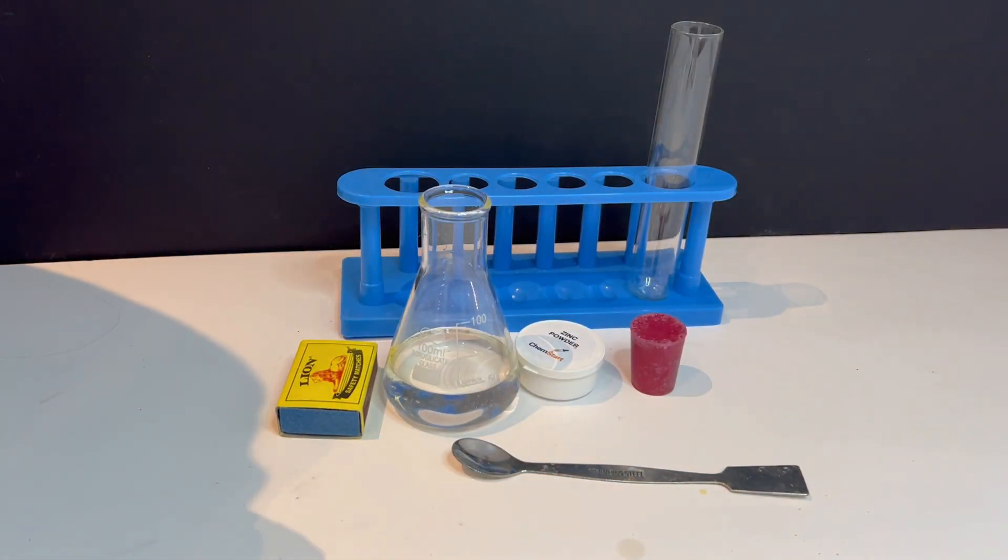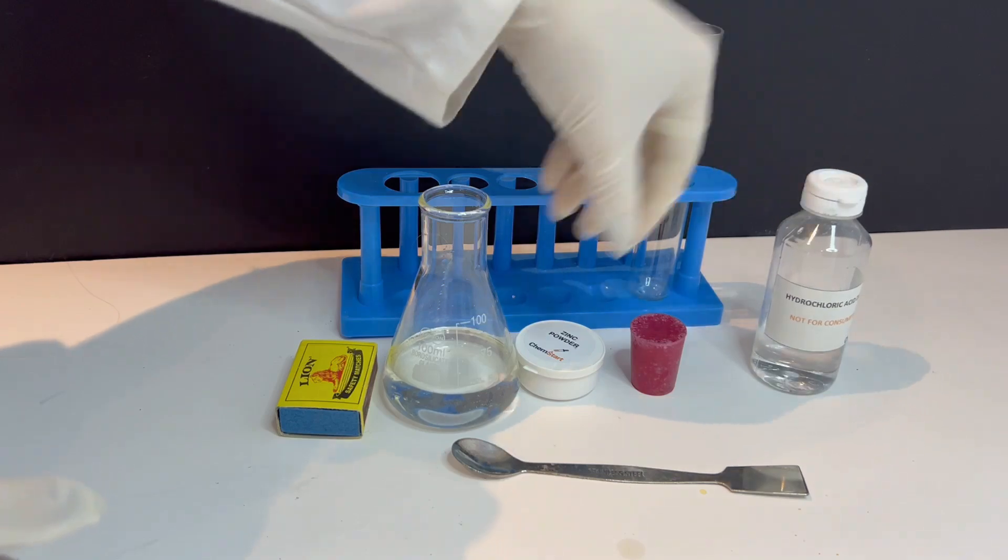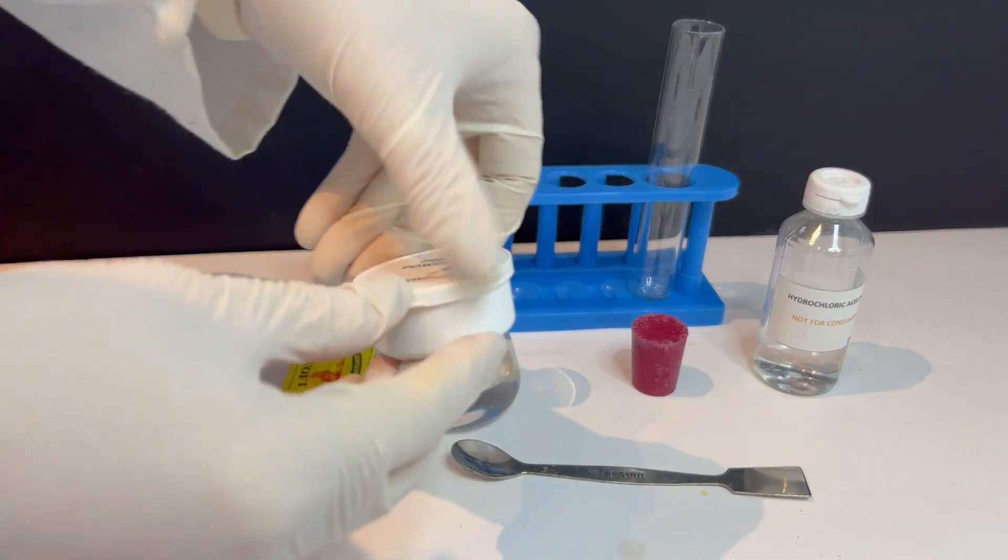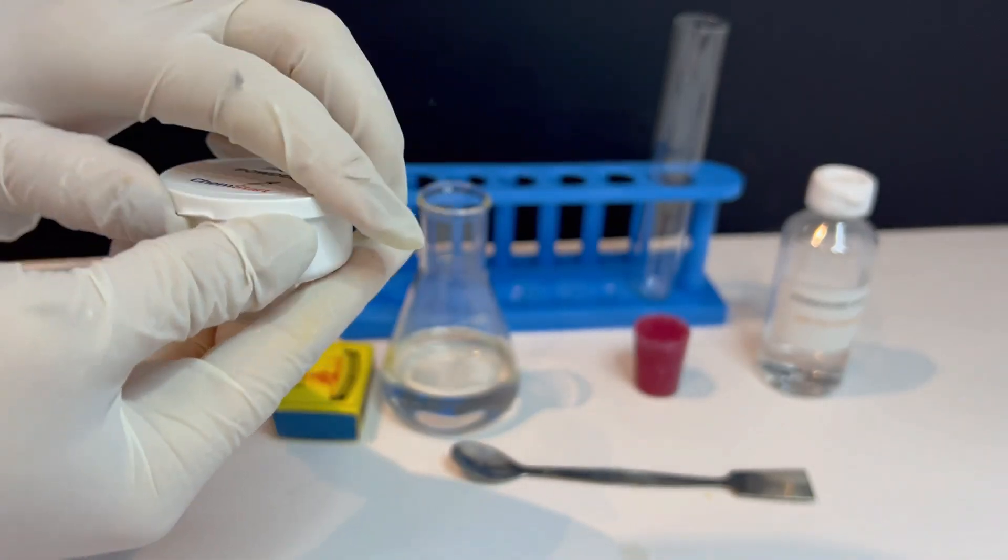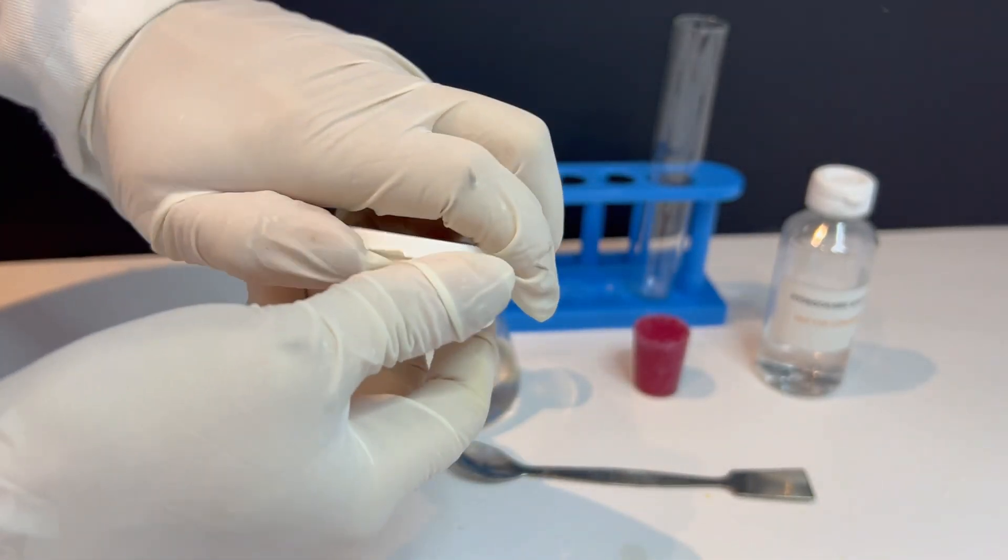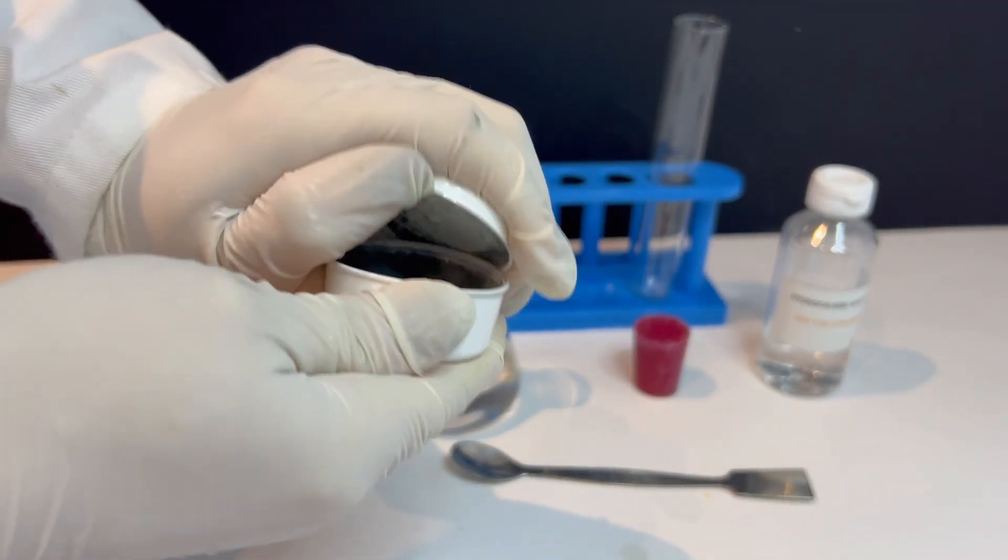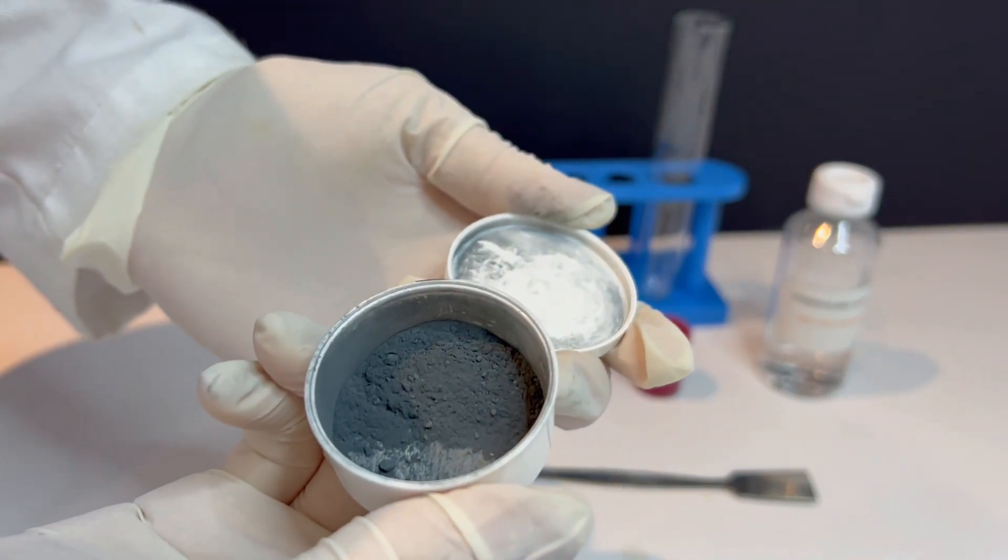Next, add a small amount of zinc powder to an Erlenmeyer flask. Remember, zinc is a metal, and in powdered form it reacts faster because it has a large surface area. That means we'll see results quickly.